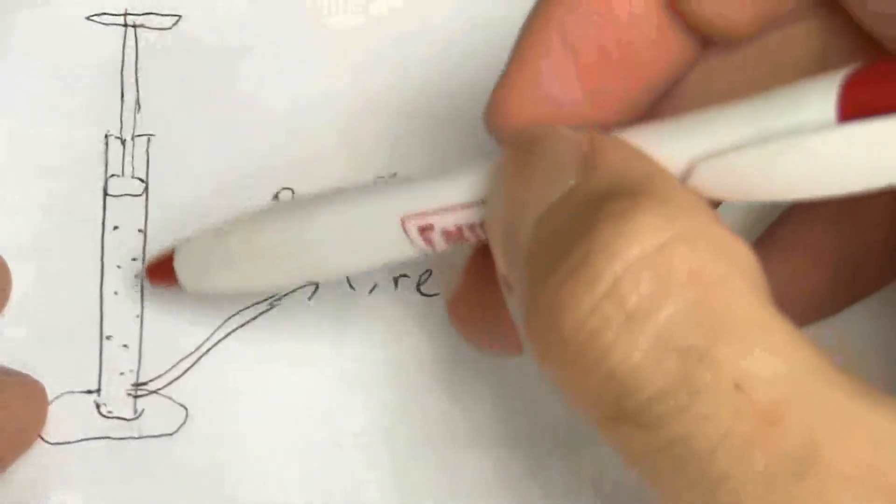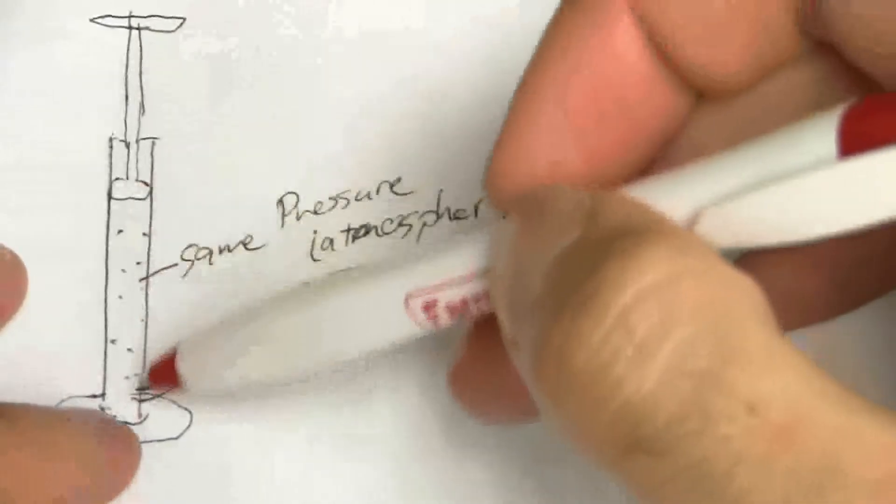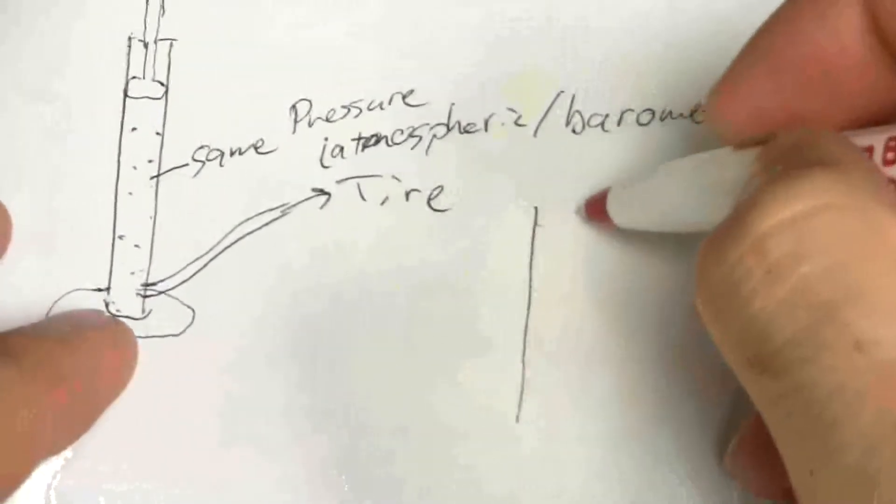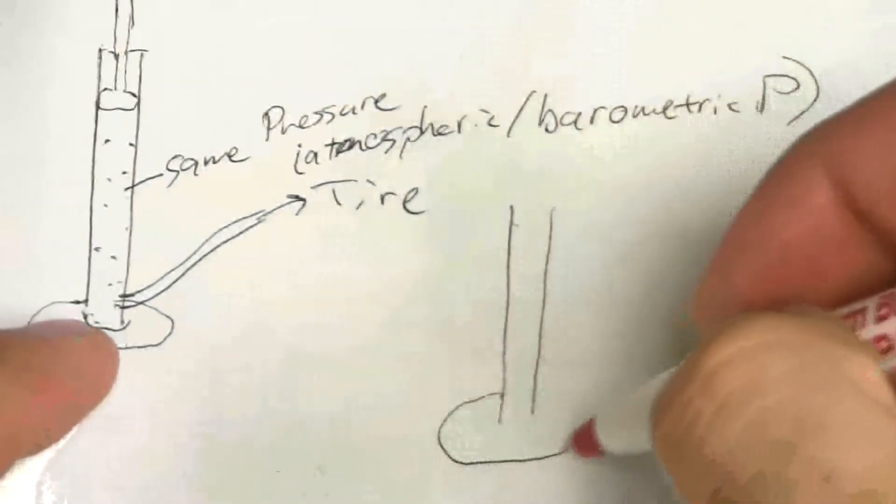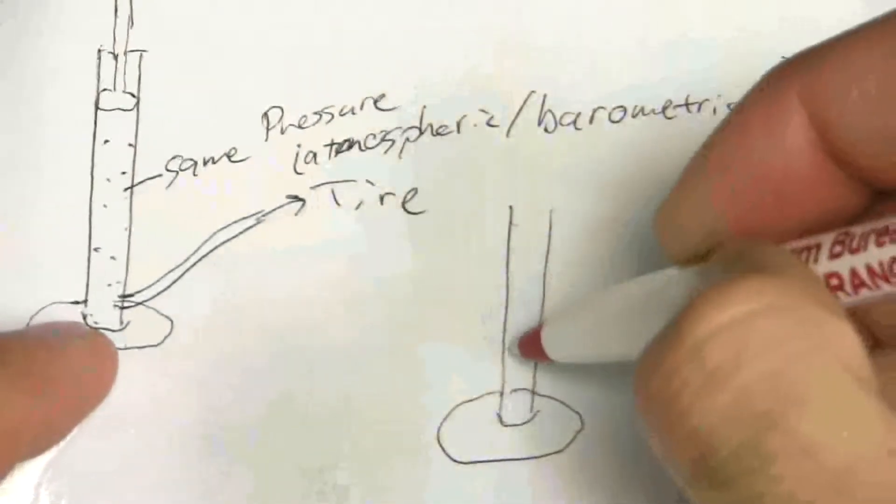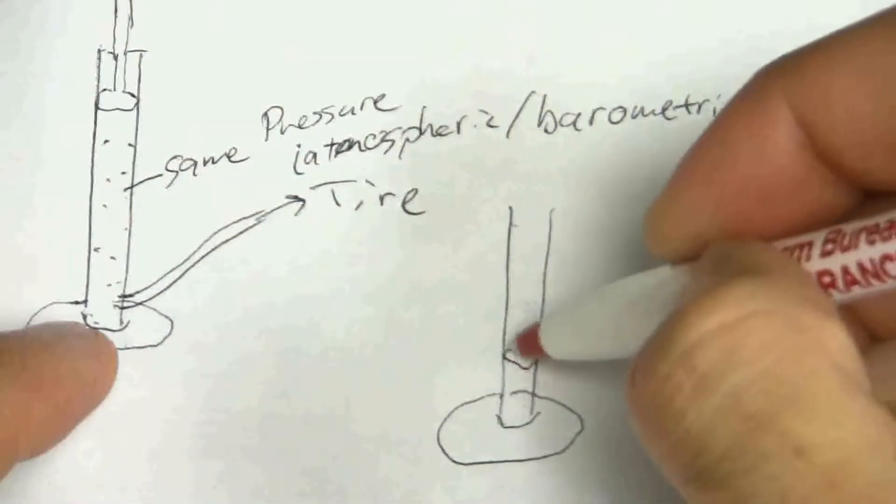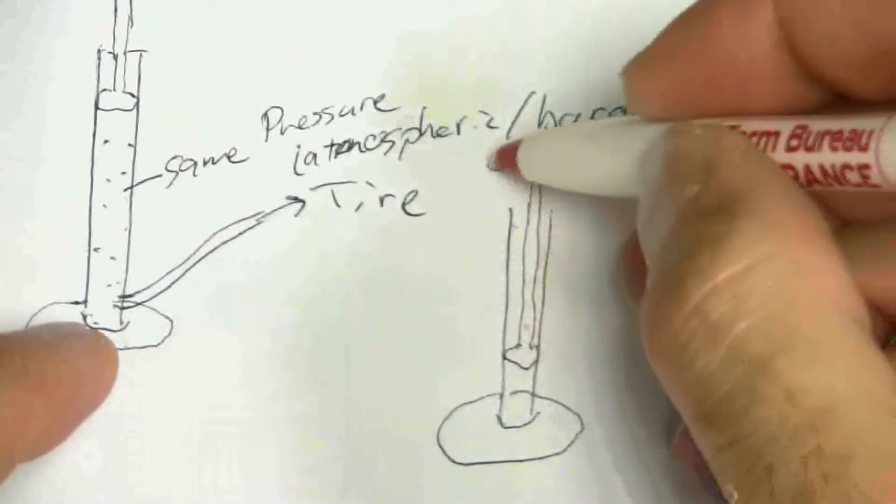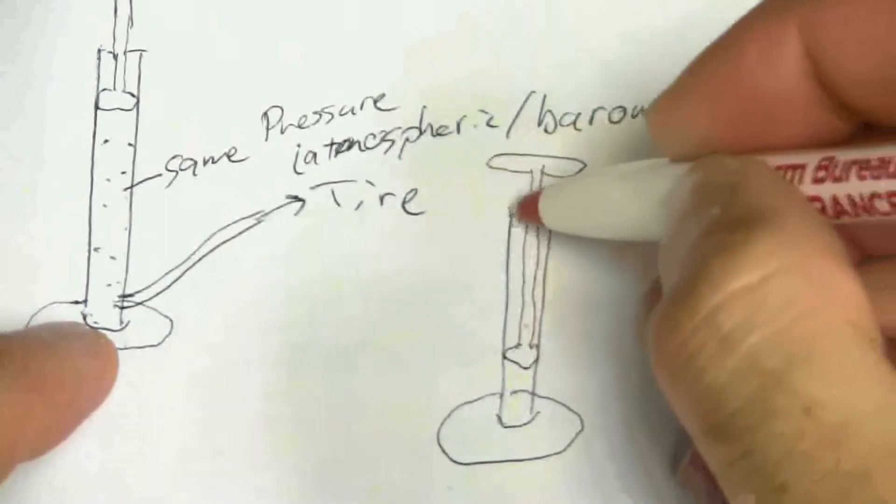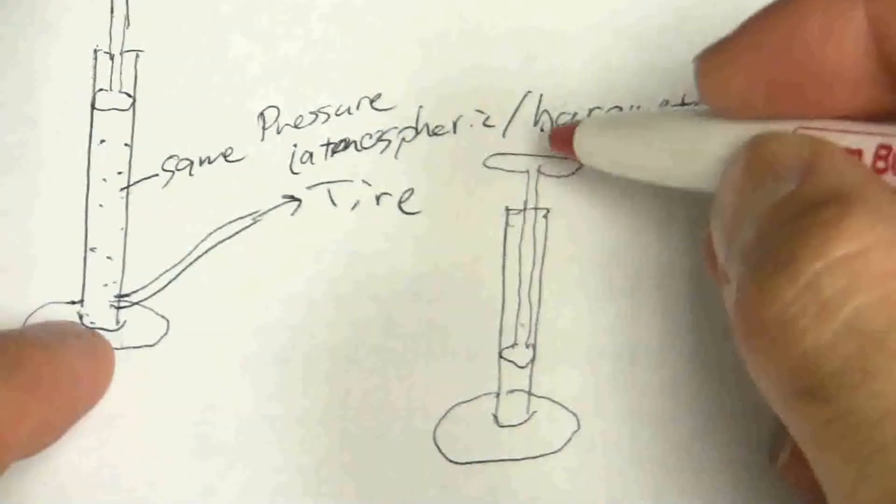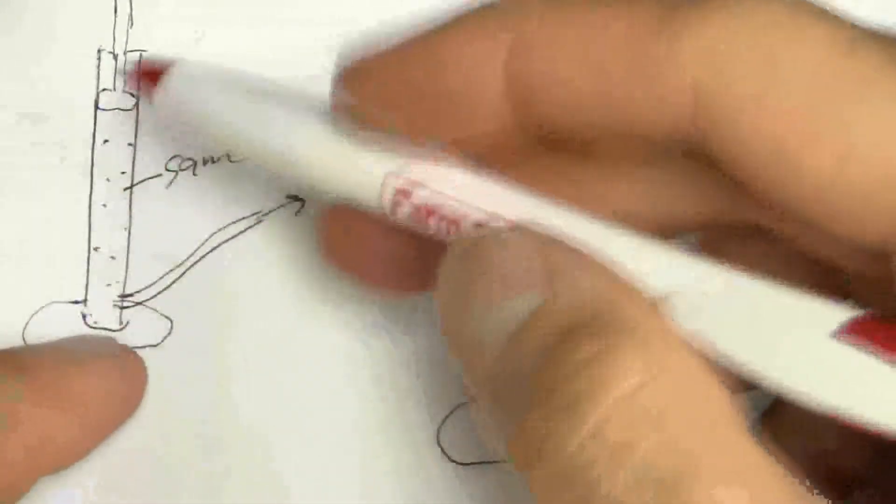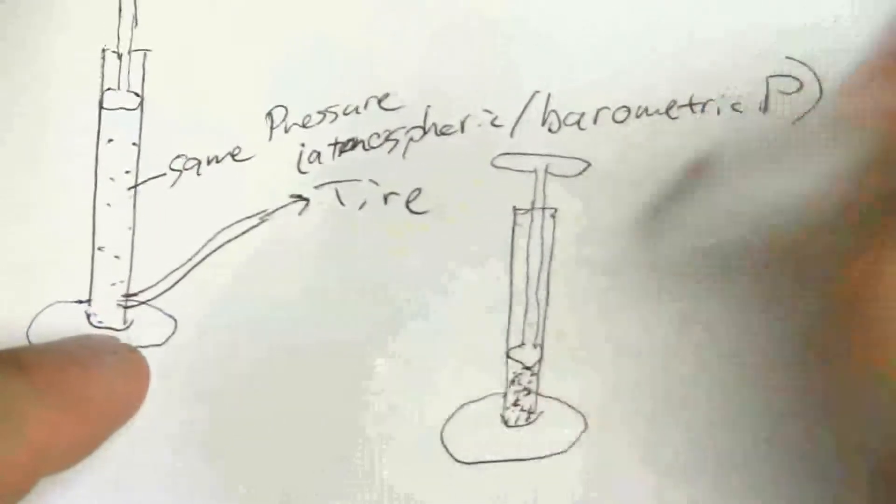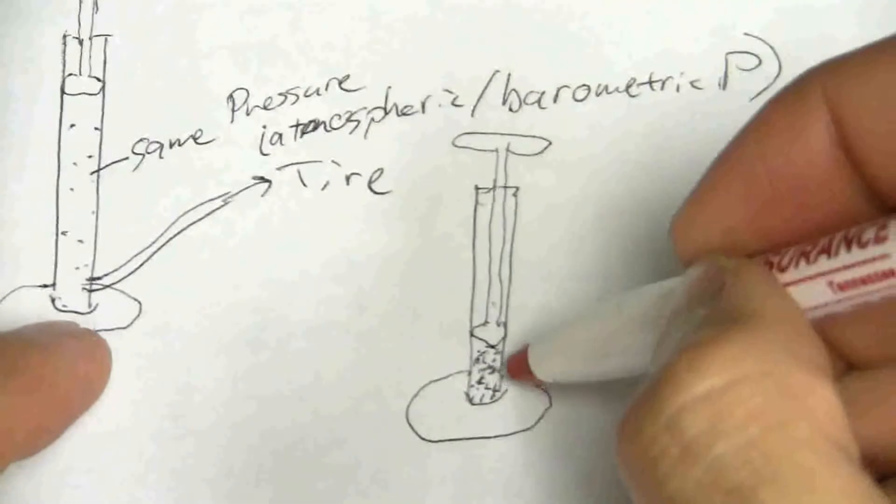But then when I push down on the pump, what's happening to my volume? Now the volume of gas inside my pump is smaller. And here's my pump handle. Now I have that same amount of gas, but it's all compressed into this tiny space down at the bottom.